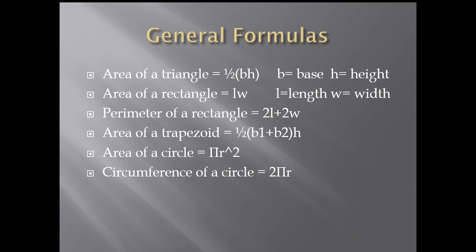General formulas. You're going to write it on your copybook. Area of a triangle, half times base times height. B is the base, H is the height. Area of a rectangle, length times width. Perimeter of a rectangle, 2 lengths plus 2 widths. Or, the perimeter of any shape, you add all the sides.